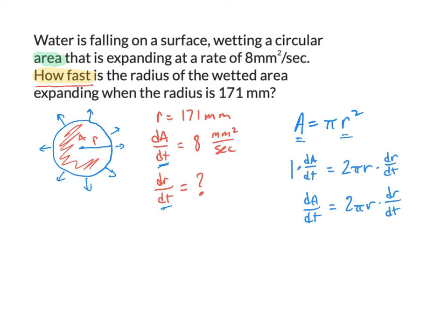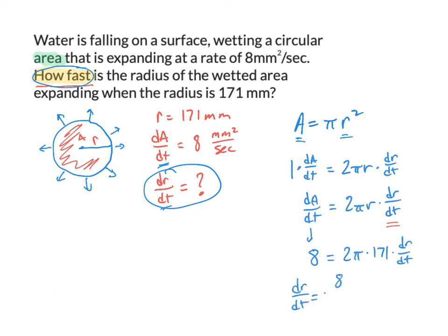We're trying to find dr/dt, so we solve for it. We plug in 8 for dA/dt and 171 for r. That gives 8 divided by 2π(171), which is 8 divided by 342π. The calculation gives approximately 0.0074 millimeters per second — that's how fast the radius is expanding.